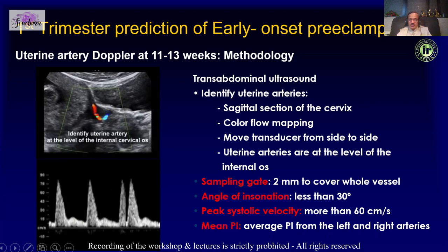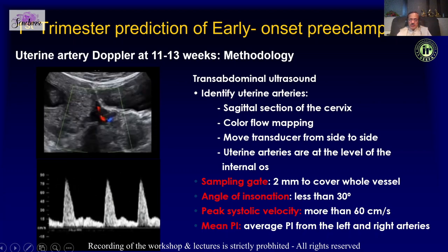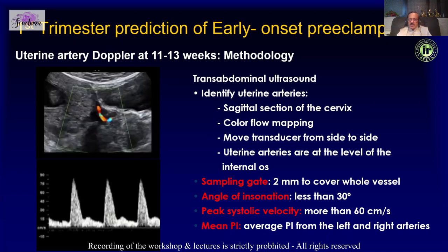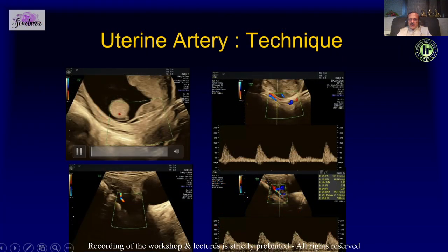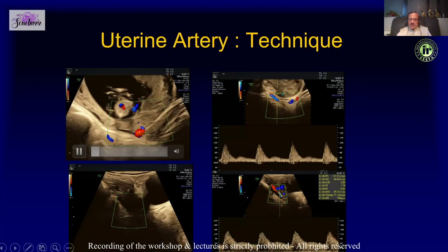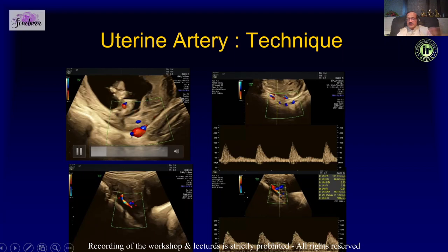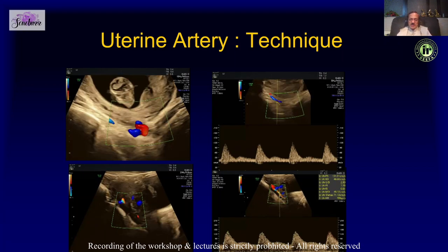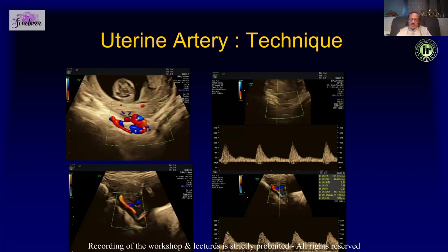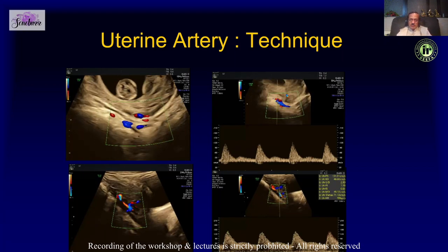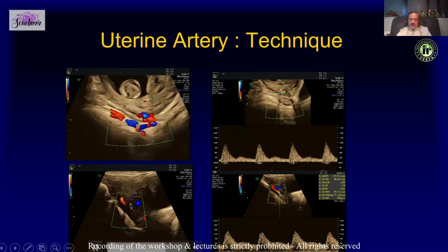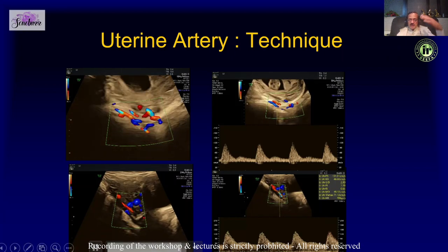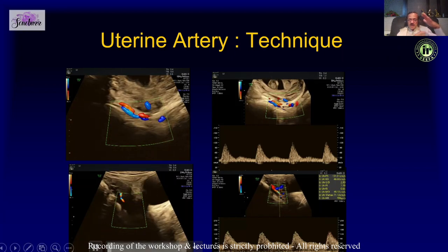Typically we look at the cervix at the internal os and then move gradually to the right or left. Most of the time we do it transvaginally. We identify the uterine arteries as they cross the iliac neck, get one full straight segment, and obtain a waveform.